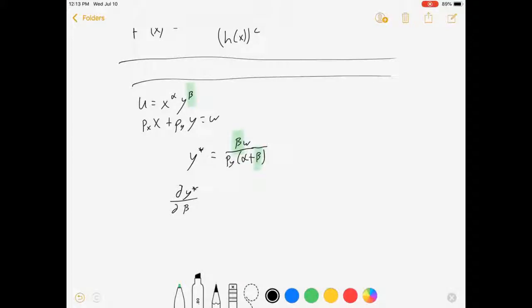Let's see, g of beta is equal to beta w, and that means that g prime of beta is just equal to w. And h of beta is equal to py alpha plus py beta. I factored out the py through the parentheses. And that means that h prime of beta is equal to just py.